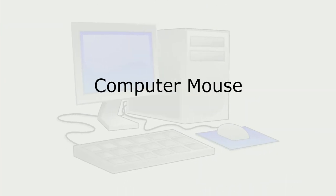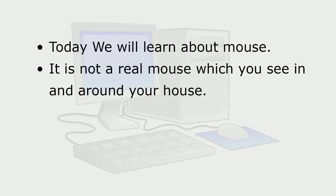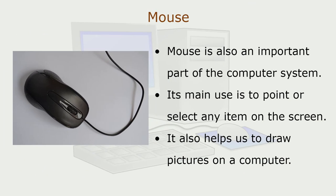Today we will learn about a mouse — not a real mouse which you see in and around your house, but a computer mouse. Mouse is also an important part of the computer system. Its main use is to point or select any item on the screen. It also helps us to draw pictures on a computer.